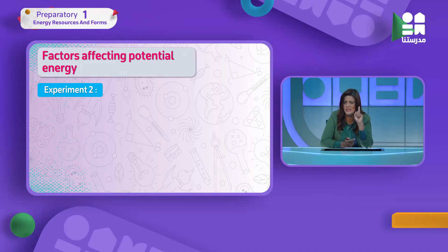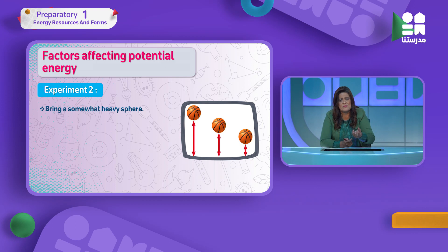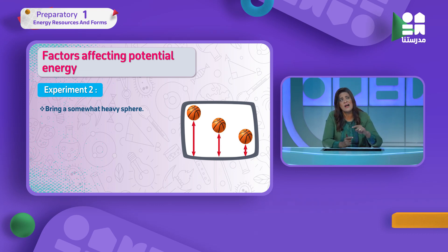As weight increases, potential energy increases because we do extra effort, so stored energy becomes more. So weight is one factor affecting potential energy. The first factor affecting potential energy is weight. The second factor — think about it — is height. As height increases, we do more work, so potential energy increases.